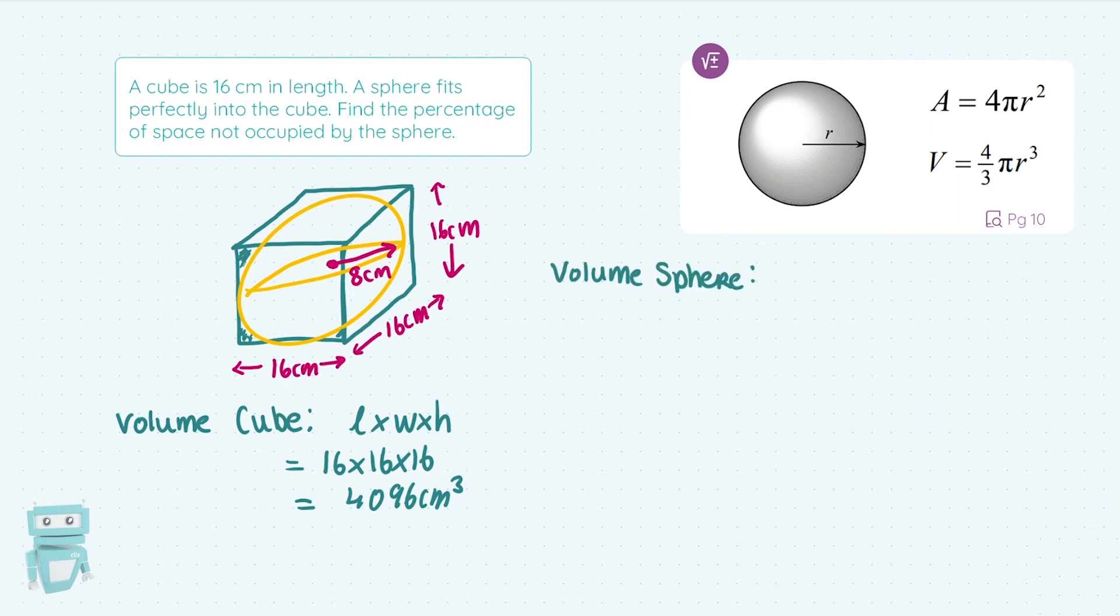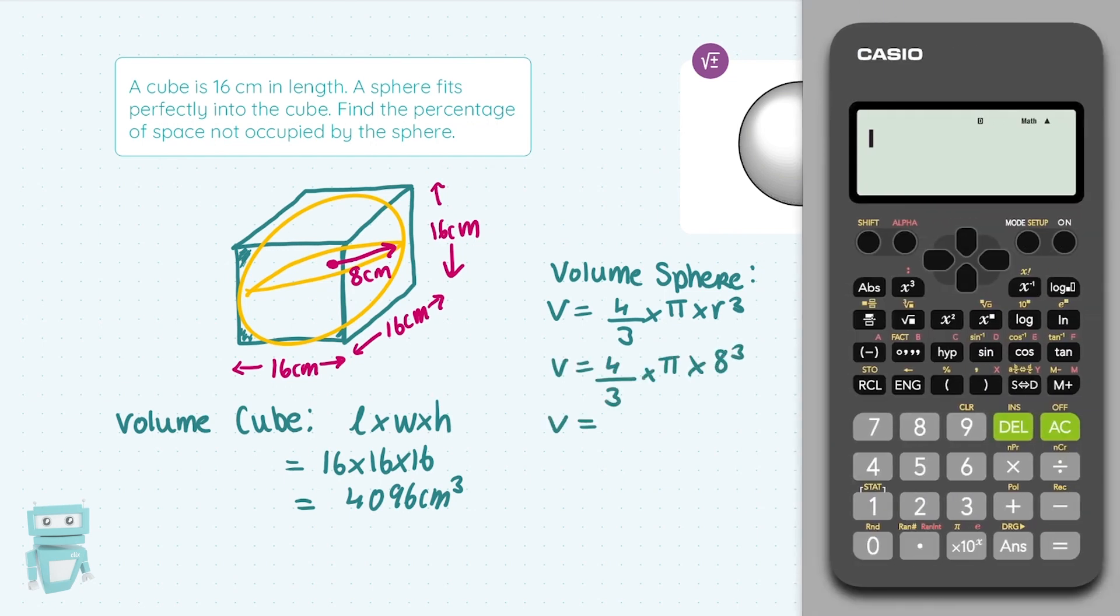Now you've got to work out the volume of the sphere. The volume of the sphere is 4/3 πr³. Now don't fall into the trap and take r to be 16. r is 8, which we can see in the picture there.